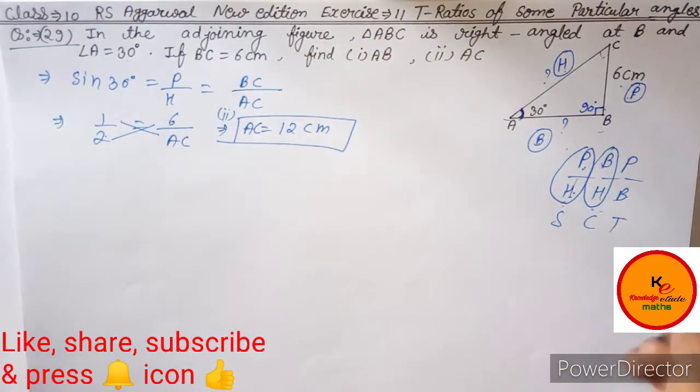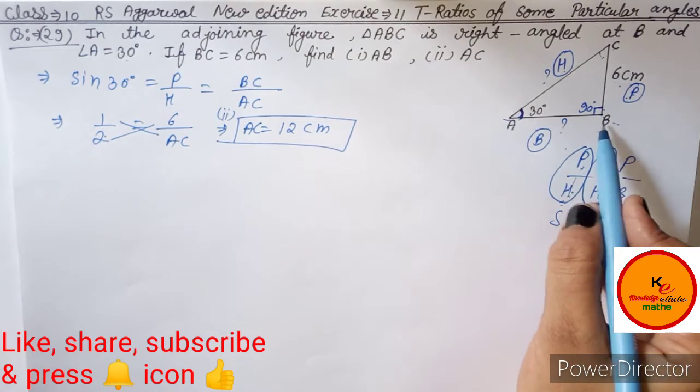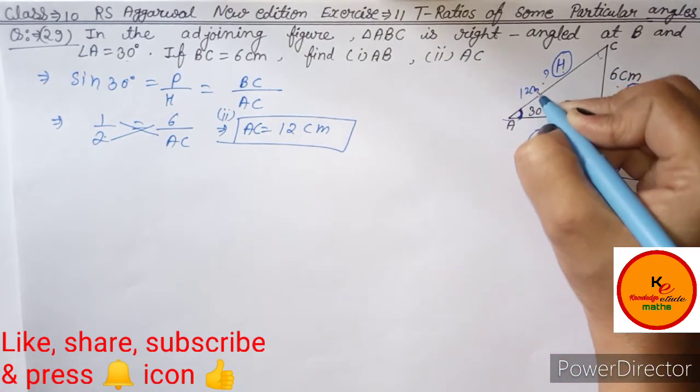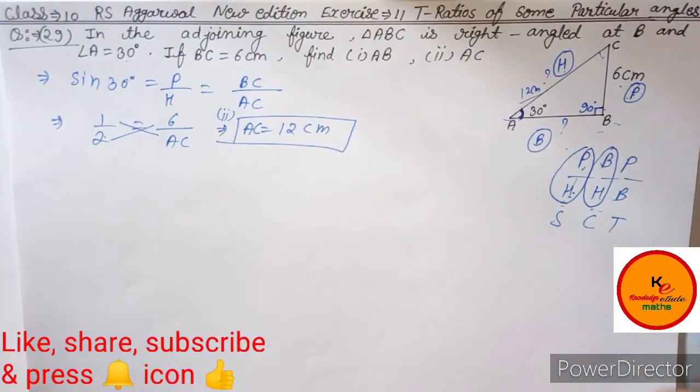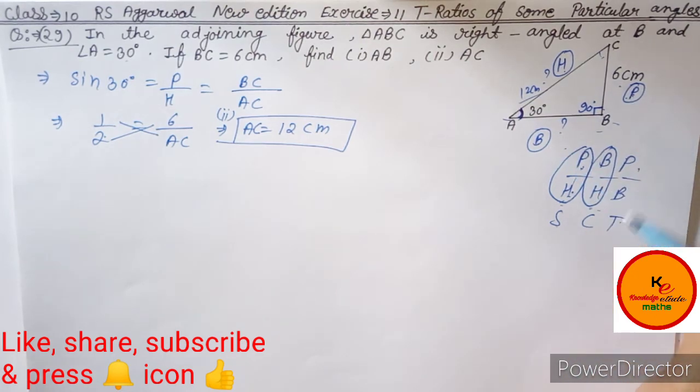Now what do we do here? We will find AB. You have hypotenuse 12 cm. Now you can solve this question. You have hypotenuse, you have to find base, so you can solve it with cos.